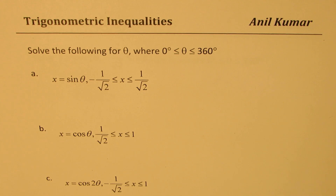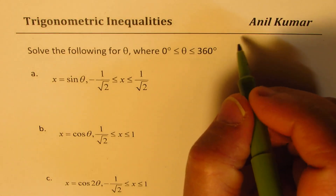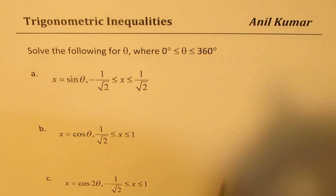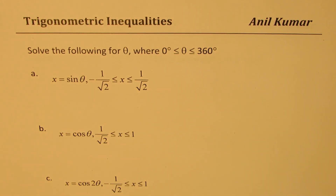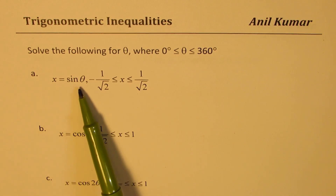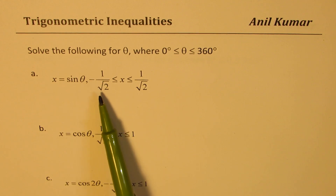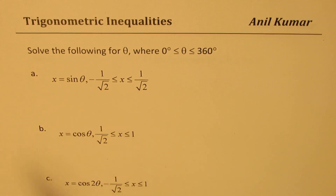The question is: solve the following for theta where theta is between 0 and 360 degrees. Now, in some equations you may not be given the restriction, so you may go for a general solution also — we'll talk about that at the end. Part A is x equals sin theta, where x is greater than or equal to minus 1 over square root 2 and less than or equal to 1 over square root 2.